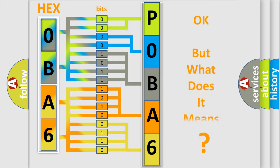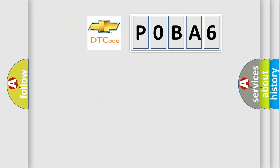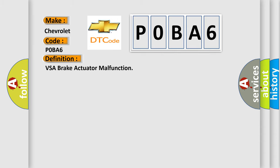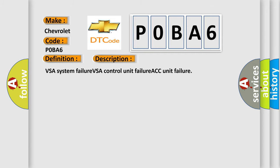We now know in what way the diagnostic tool translates the received information into a more comprehensible format. The number itself does not make sense to us if we cannot assign information about what it actually expresses. So, what does the Diagnostic Trouble Code P0BA6 interpret specifically for Chevrolet car manufacturers? The basic definition is: VSA Brake Actuator Malfunction.